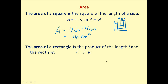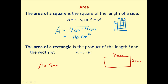This is very similar to a rectangle. If I have a rectangle that is 5 millimeters by 8 millimeters, the area equals the length times the width, or 5 millimeters times 8 millimeters, which gives us 40 millimeters squared.